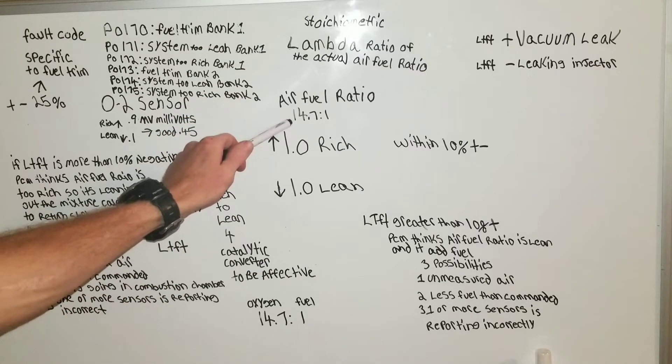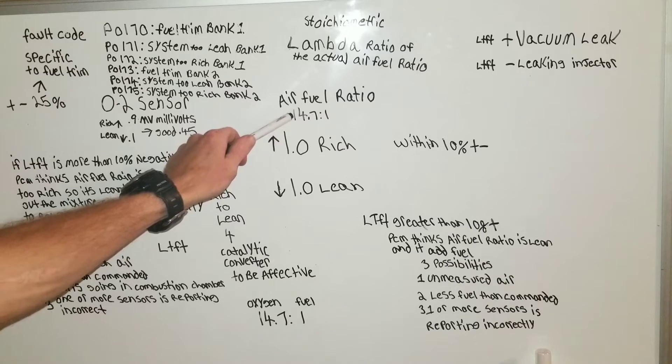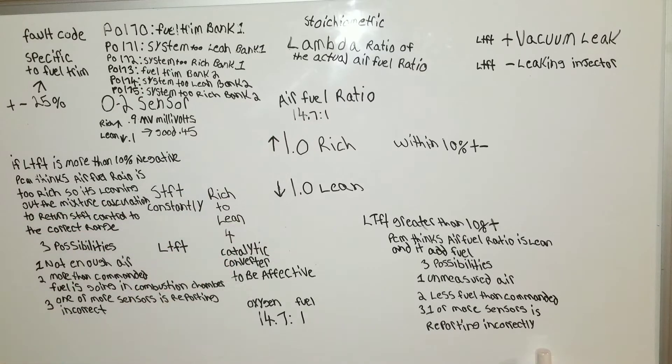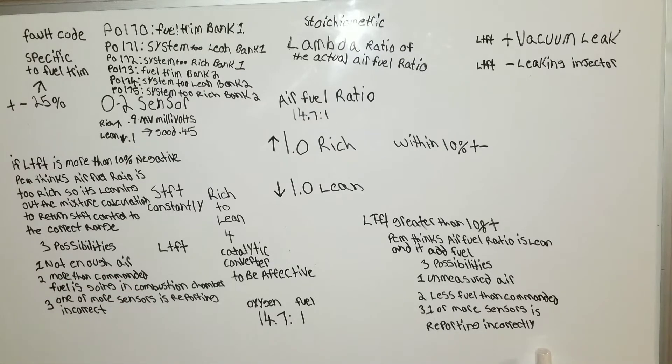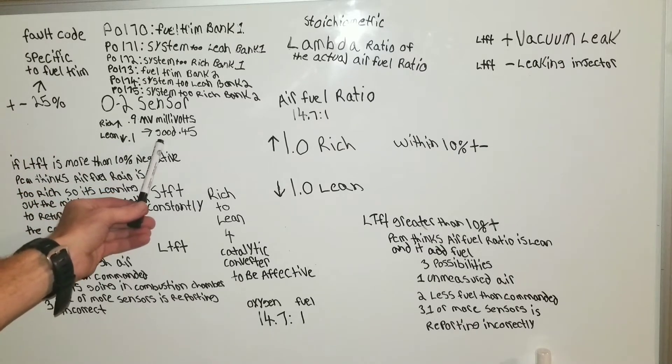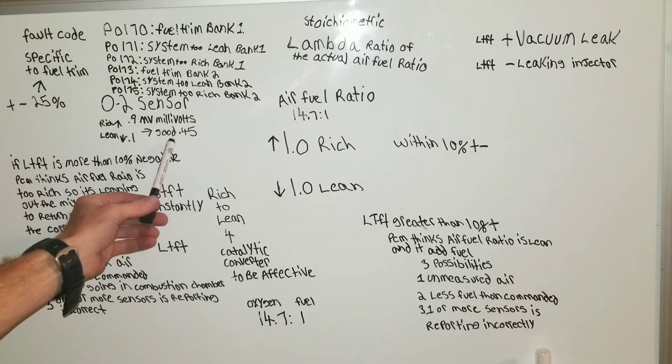That's 14.7 parts air to one part oxygen. So also you can look at a reading in your O2 sensor, 0.9 millivolts would be rich, 0.1 millivolts would be lean, a good perfect mixture would be 0.45.